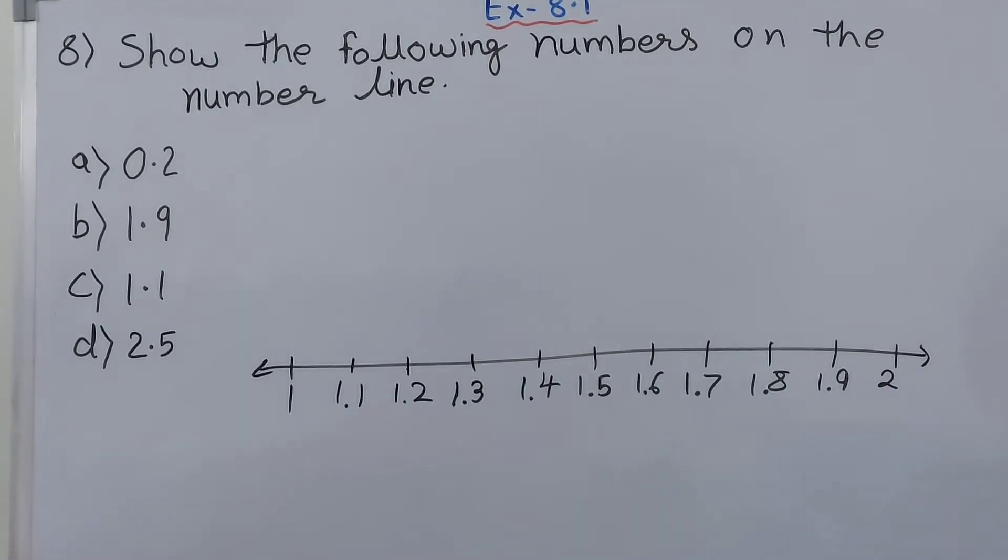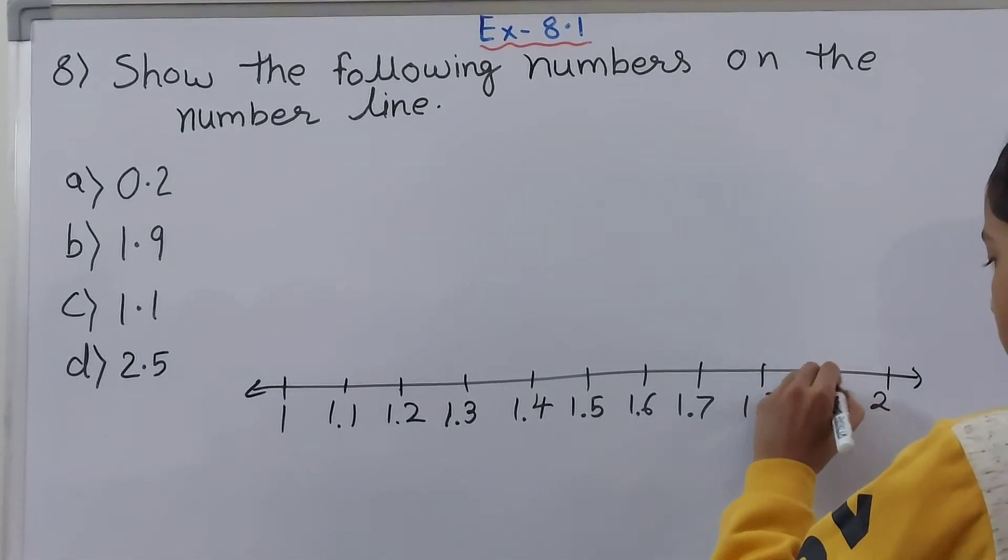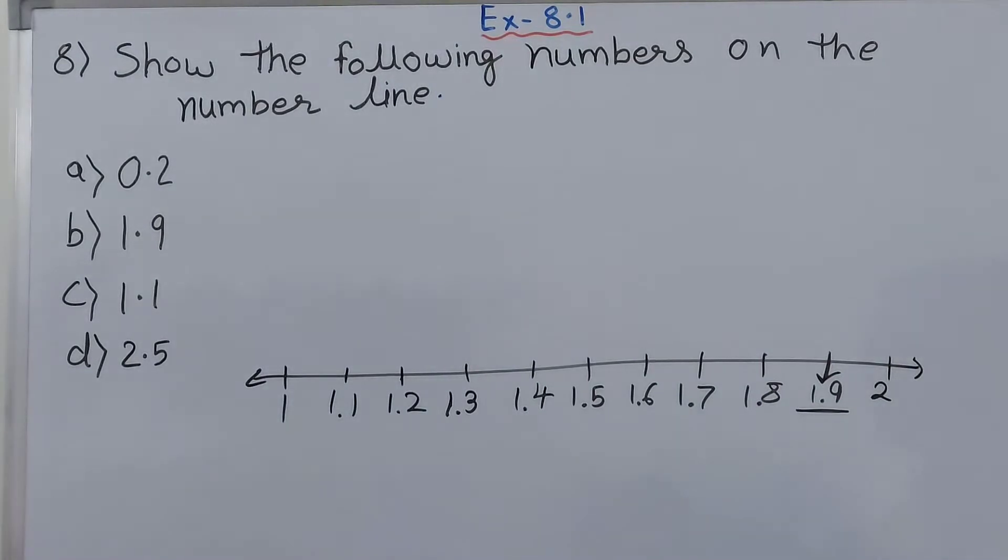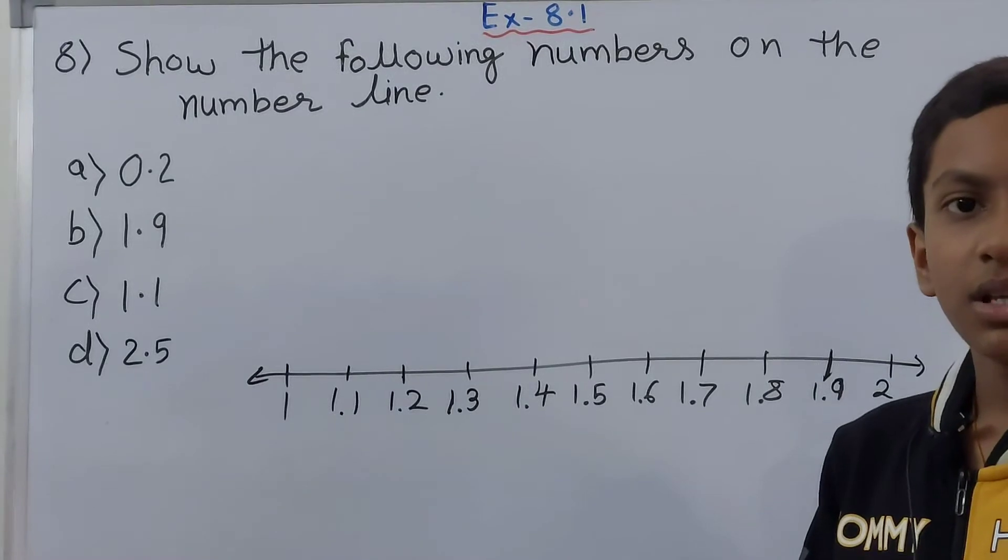Now let's see where does 1.9 lie. 1.9 is over here. This is how we can locate 1.9 on a number line.